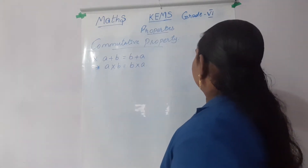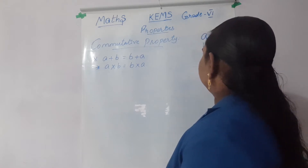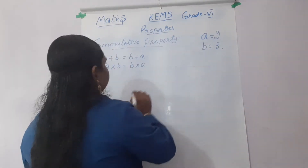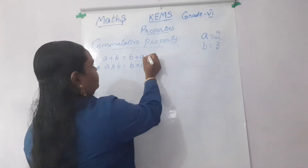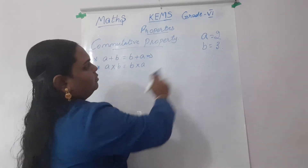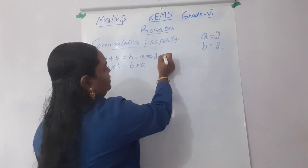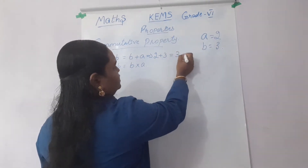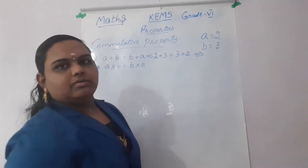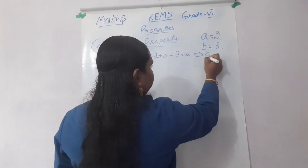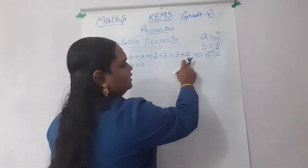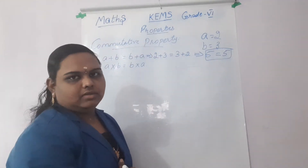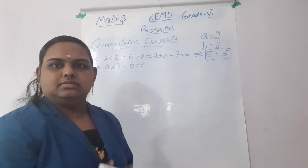Let's check. I am taking A is equal to 2 and B is equal to 3. First I am going to check the first condition. What is the value of A plus B? That is 2 plus 3 equal to B plus A. What is B plus A? 3 plus 2. So 2 plus 3 is equal to 5, equal to 3 plus 2 is equal to 5. The answer is equal. So the commutative property is closed under addition.